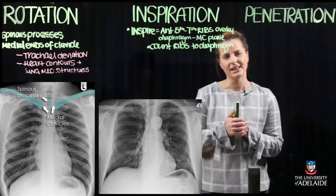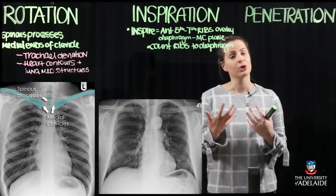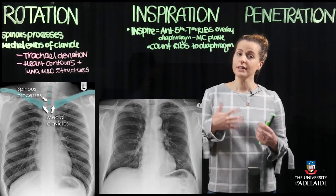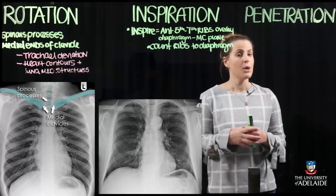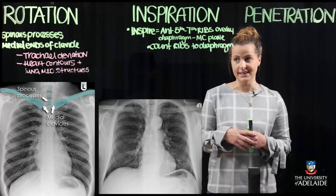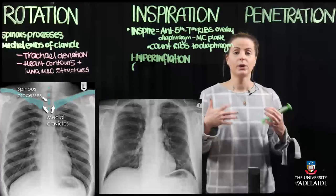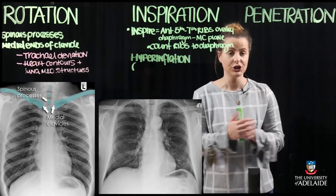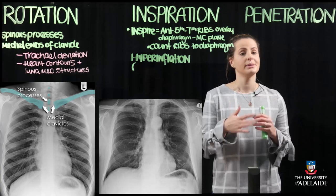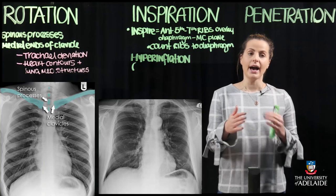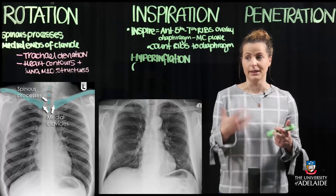In a fully inspired state, also consider whether there is hyperinflation of the lungs. Hyperinflation or over-expansion of the lungs can be associated with obstructive pulmonary disease, so it's important to rule this out. Using the rib-counting technique, if ribs 8 to 12 are intersecting the diaphragm this usually means there is overinflation.